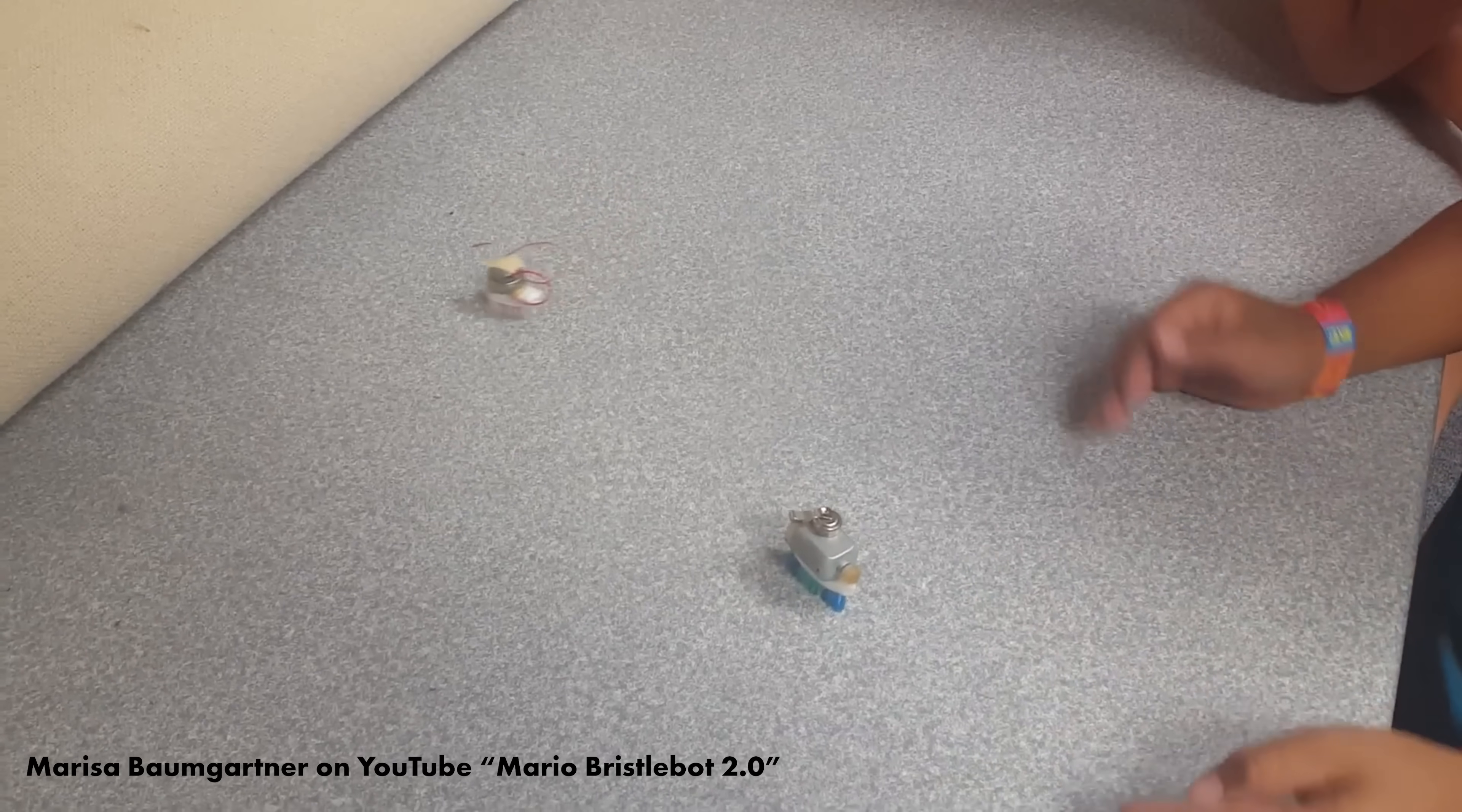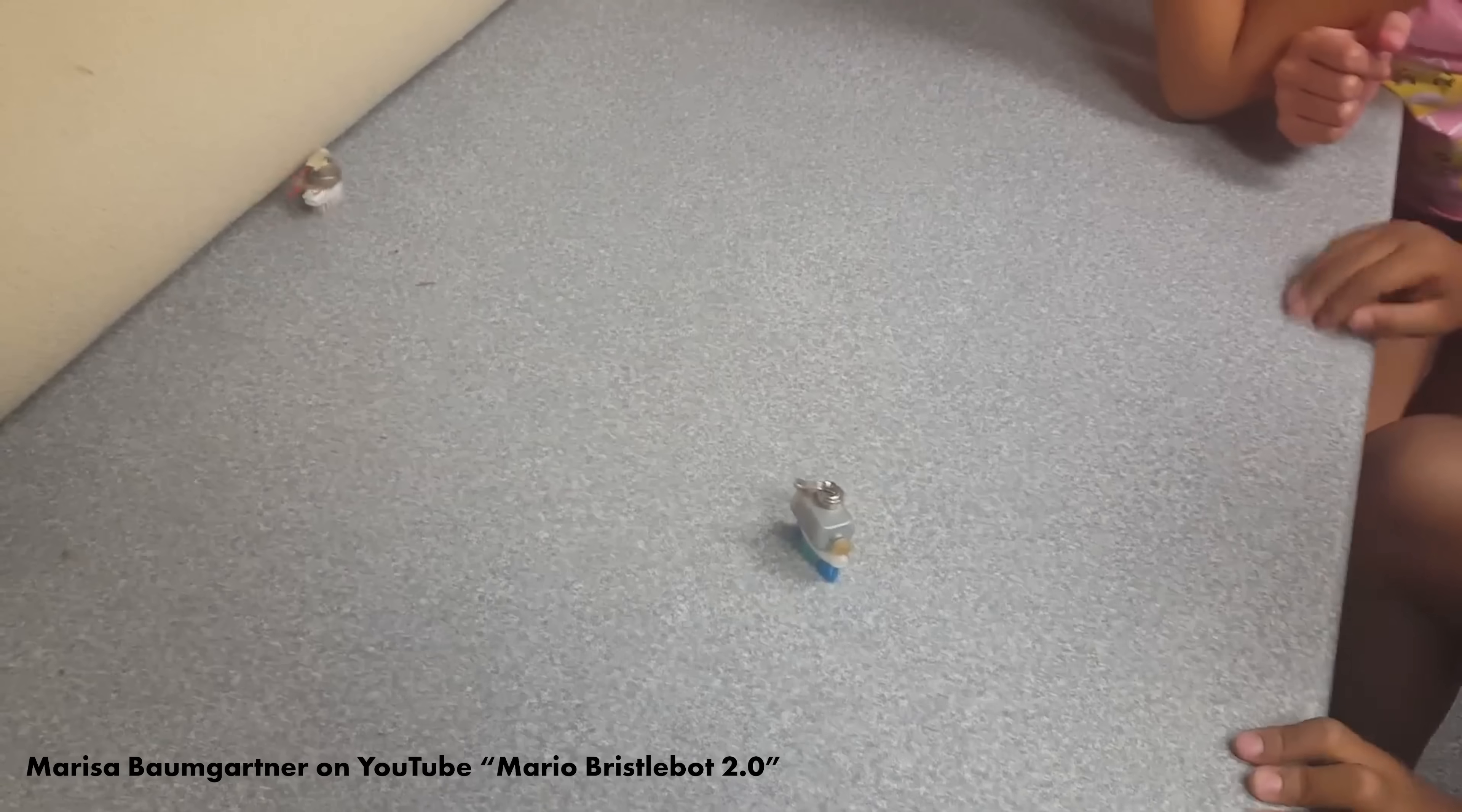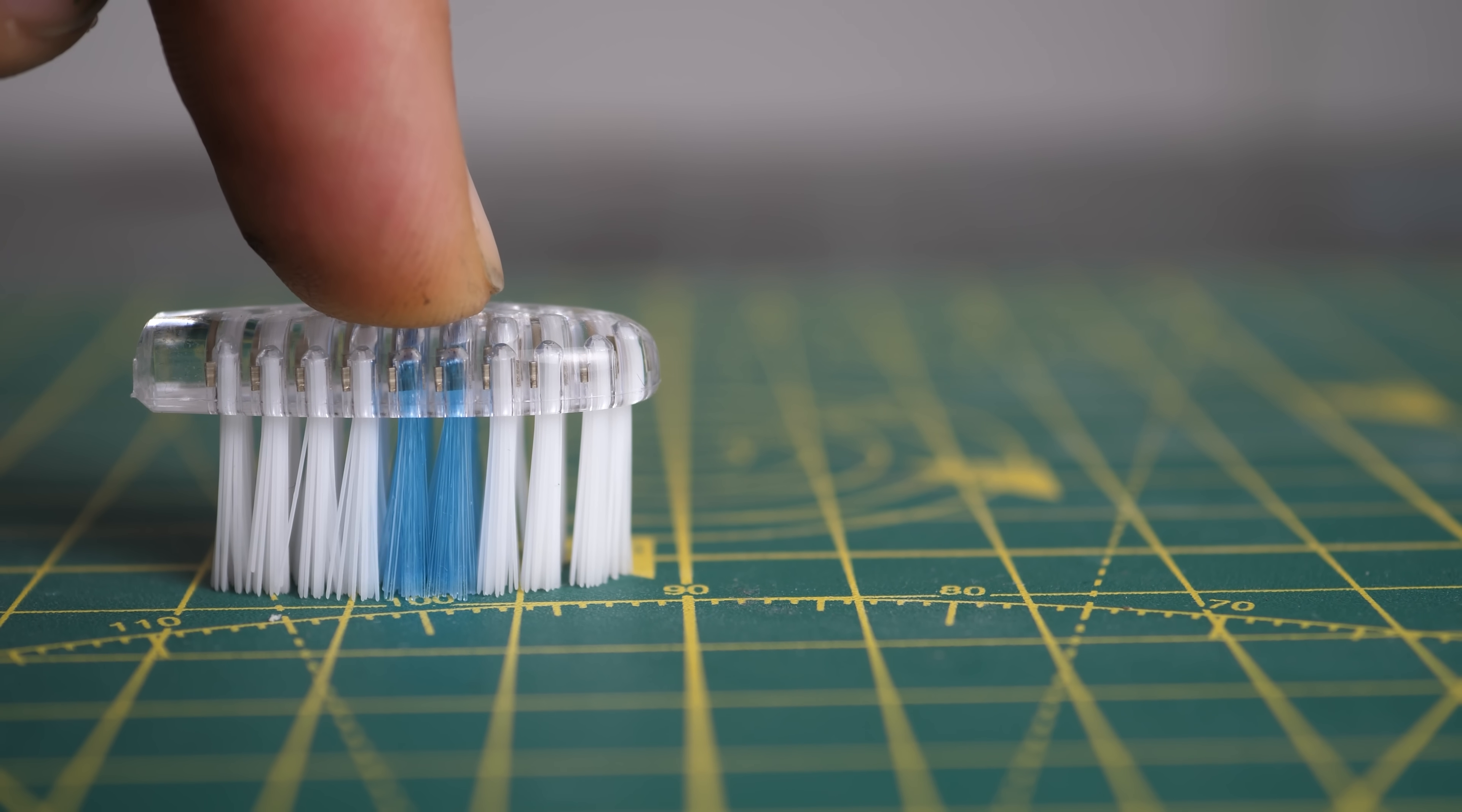Take, for example, the bristle bot. The bristle bot works by vibrating the head of a toothbrush up and down, and that's obviously reciprocating motion, but it leads to forward progress of the bristle bot. If I slowly press down on the head of this toothbrush, it leans forward on the bristles, and if I slowly let go, it leans back up again.